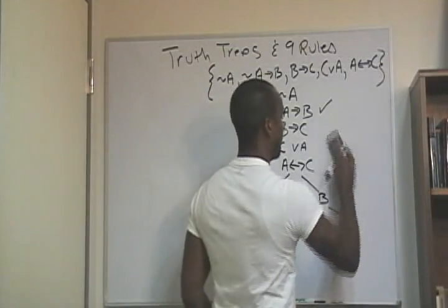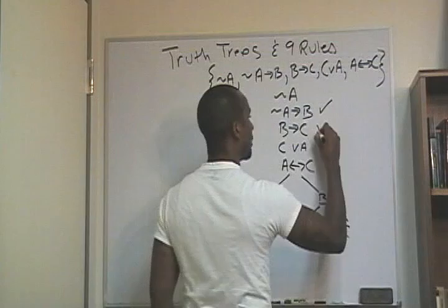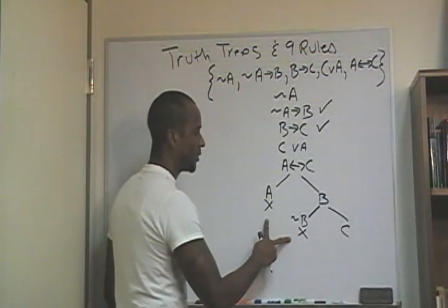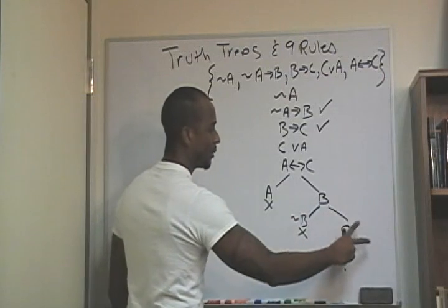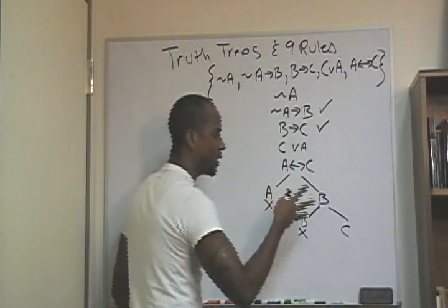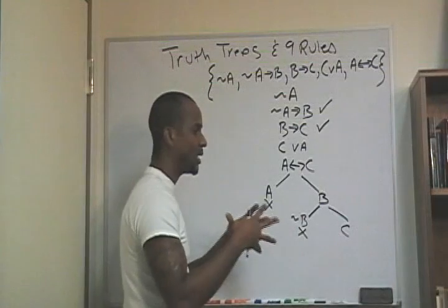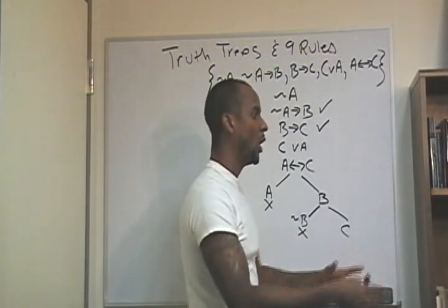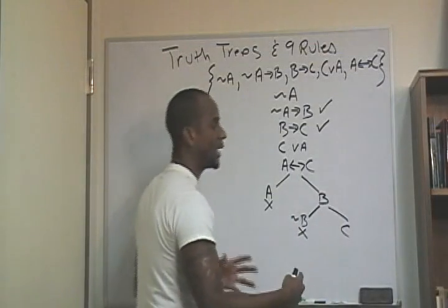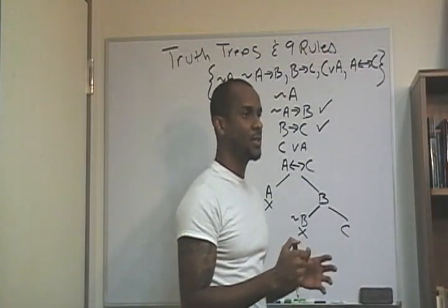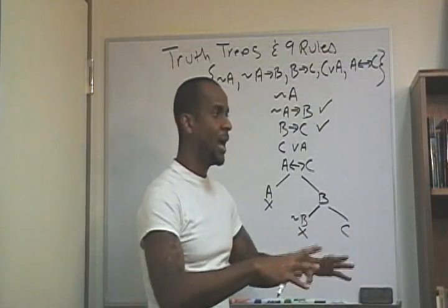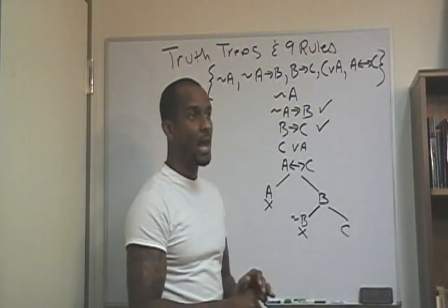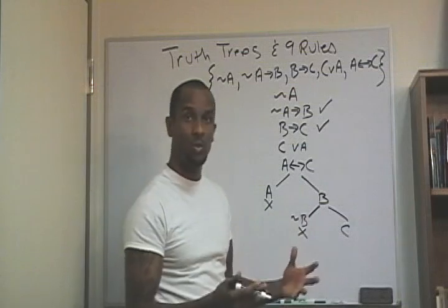We've applied the rule to two statements now and closed two branches of the tree, but the tree is still growing. The tree continually grows where open branches permit growth. When all branches close, the set is inconsistent. If all my branches finish growing without an inconsistency, then I'll have open branches and my tree will be consistent.